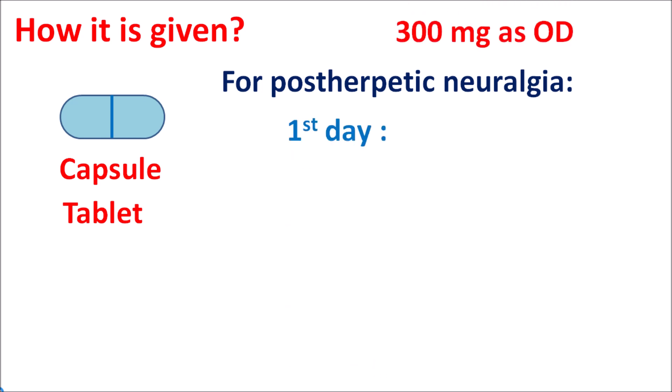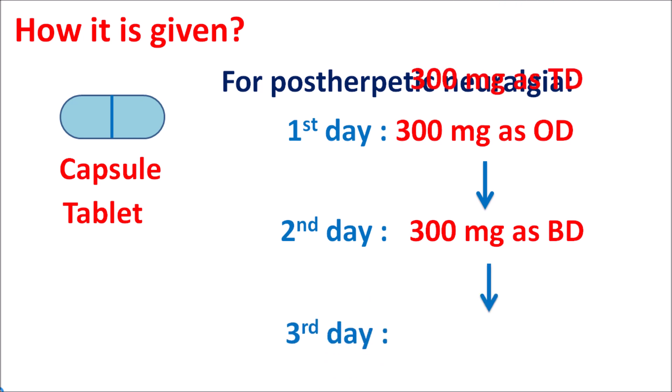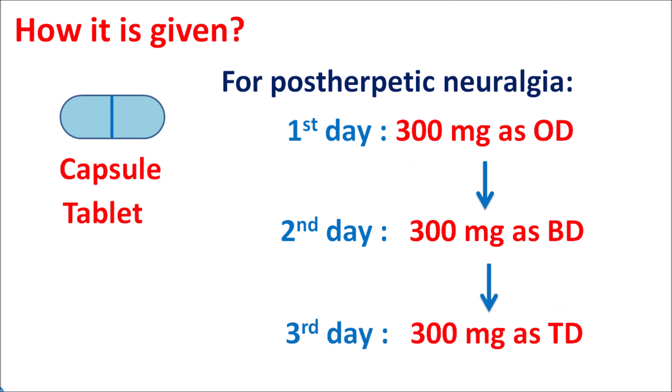For the treatment of post-herpetic neuralgia, the dose is titrated: on day one, 300 mg once daily; on day two, 300 mg twice daily (total 600 mg); on day three, 300 mg thrice daily (total 900 mg). The patient is then maintained at 600 mg thrice daily, giving a total daily dose of 1800 mg.